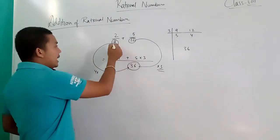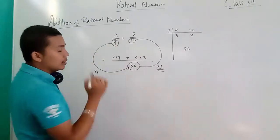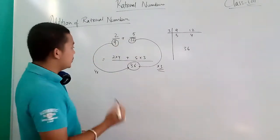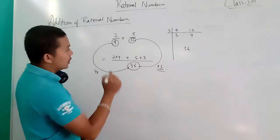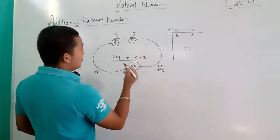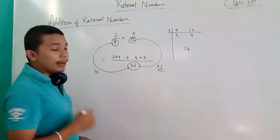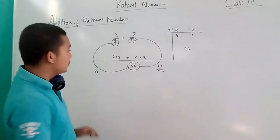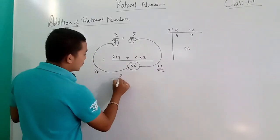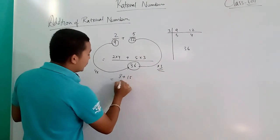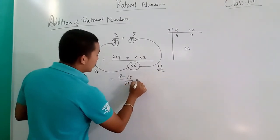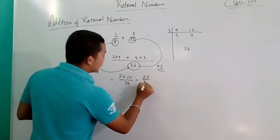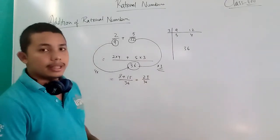In the same way, 9 goes into 36 four times, 2 into 4. 12 goes into 36 three times, 5 into 3. The answer will be 8 plus 15 by 36 equal 23 by 36.